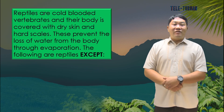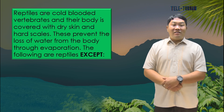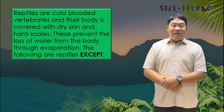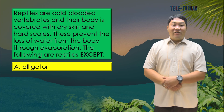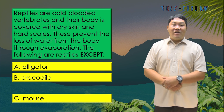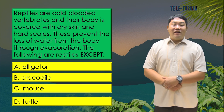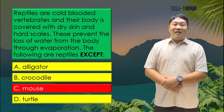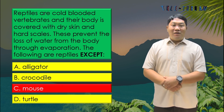Reptiles are cold-blooded vertebrates and their bodies are covered with dry skin and hard scales, which prevent the loss of water through evaporation. The following are reptiles except — letter A, alligator? Letter B, crocodile? Letter C, mouse? Or letter D, turtle? The answer is letter C, mouse.